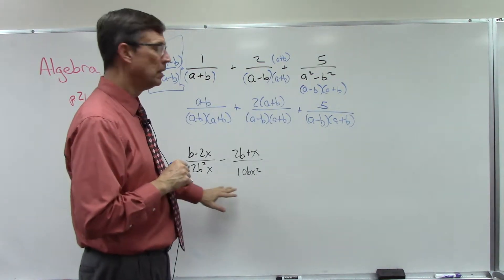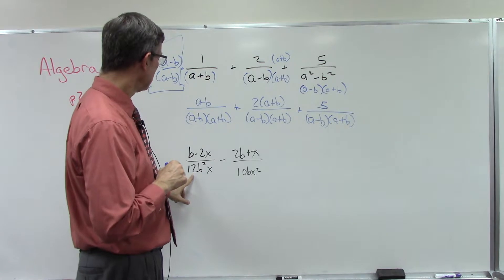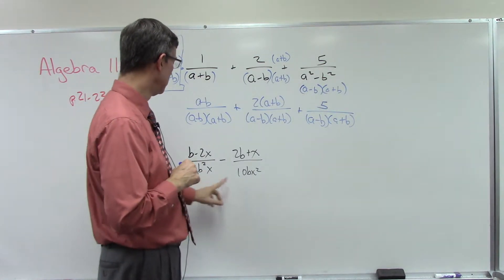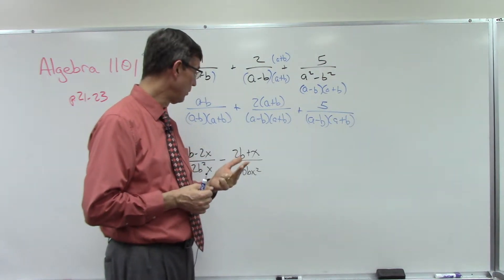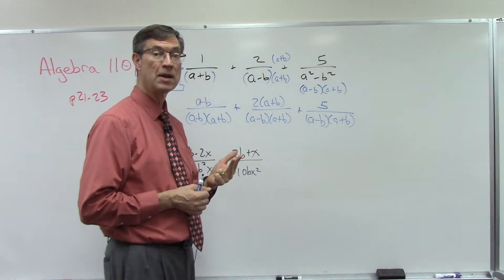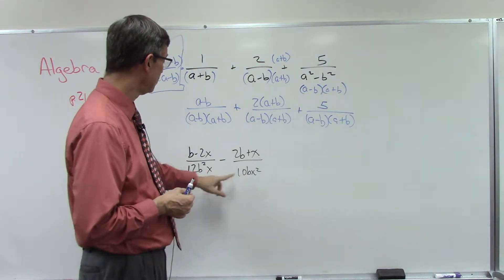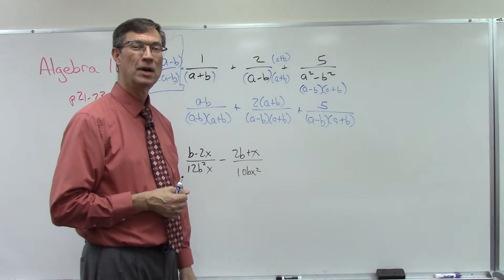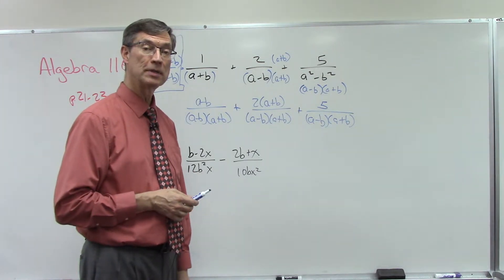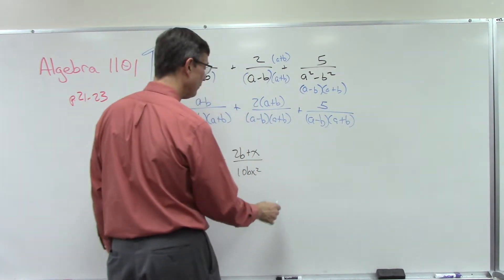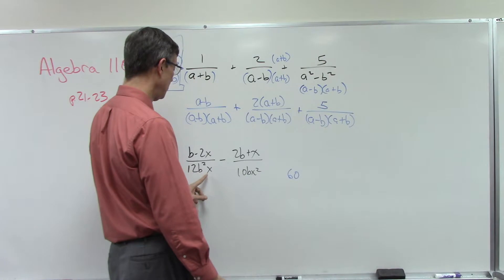Let's think about what is the least common multiple — the common denominator. What's the common denominator of 12 and 10? Well, 12 has factors 2, 2, and 3, and 10 has factors 2 and 5. I've already got the 2 covered but I'm missing a 5, so if I multiply 5 times 12 I'll have 60. And would 12 and 10 both divide into 60? Yes. So I'm going to write 60 over here.